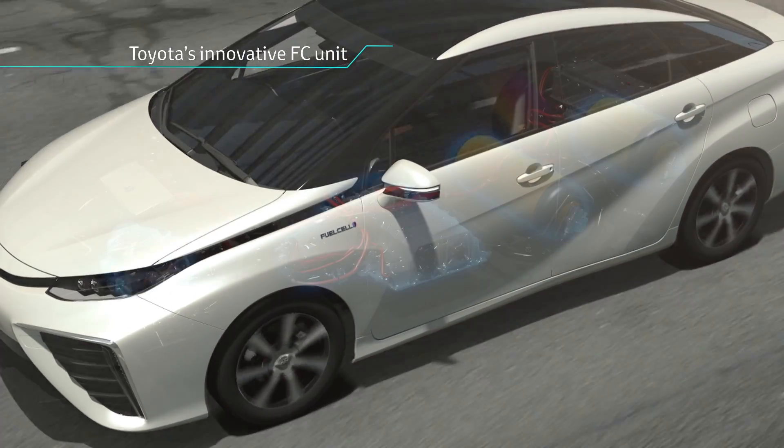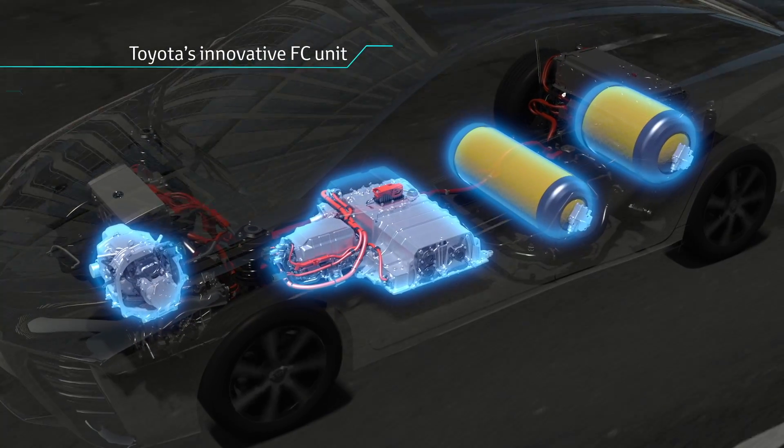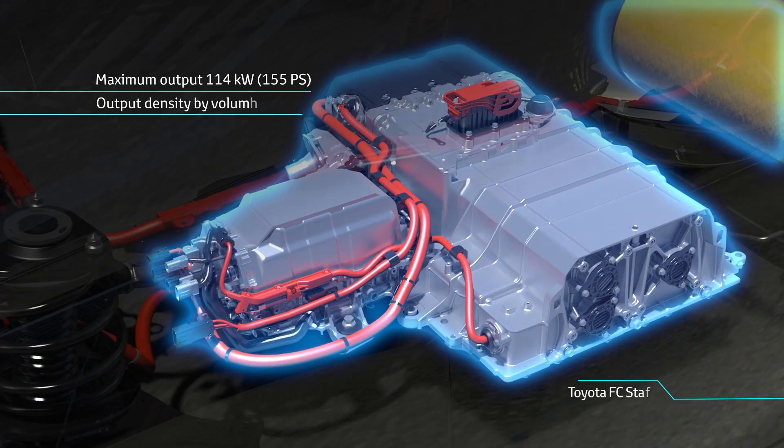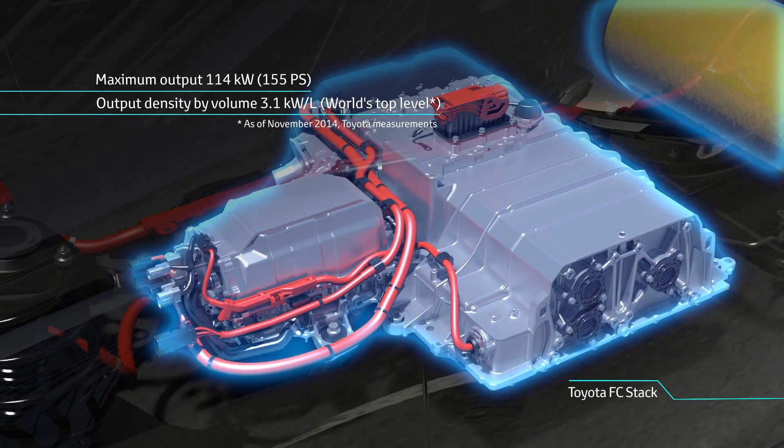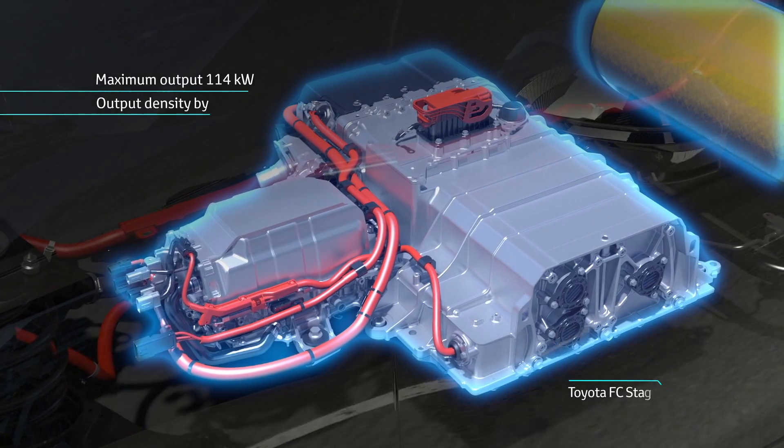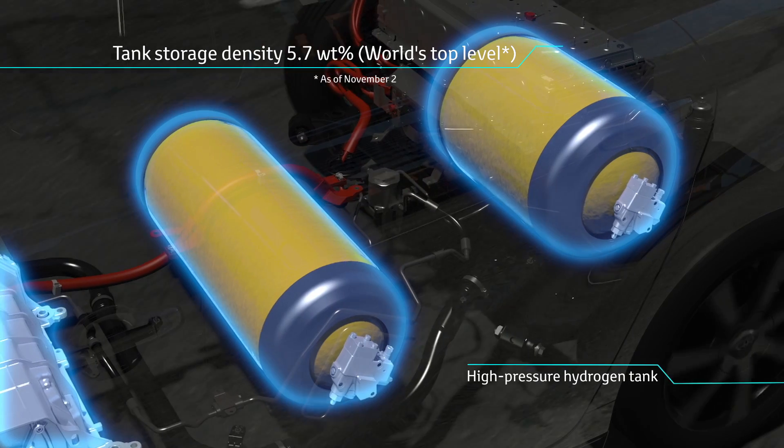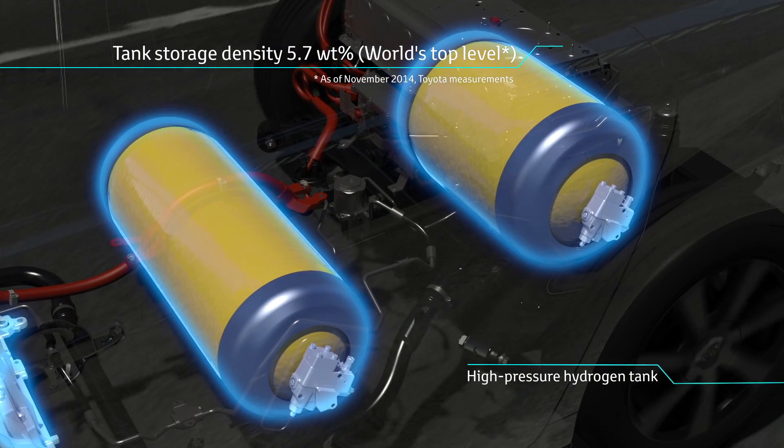The fuel cell unit in the FCV generates over 100 kilowatts of its own electricity, operating at 3.1 kilowatts per liter of output power density. The high pressure hydrogen tank contains 5.7 watts percent, which is a world class feature.